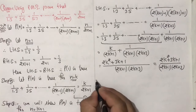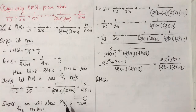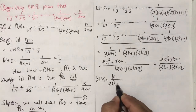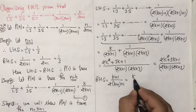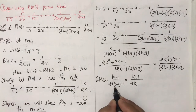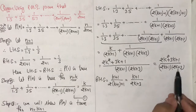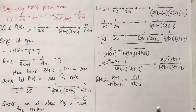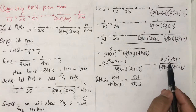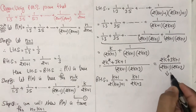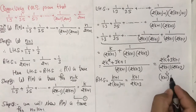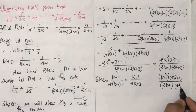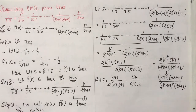Now find the RHS. Putting n = k+1 in n/(2n+1): RHS = (k+1)/(2(k+1)+1) = (k+1)/(2k+3). Now factorize the numerator of LHS: 2k² + 3k + 1 = 2k² + 2k + k + 1 = 2k(k+1) + 1(k+1) = (k+1)(2k+1). So LHS = (k+1)(2k+1) / ((2k+1)(2k+3)). The (2k+1) terms cancel, giving (k+1)/(2k+3), which equals RHS.